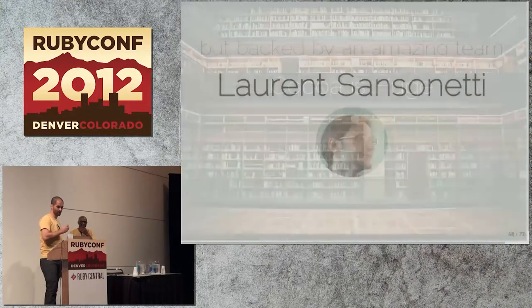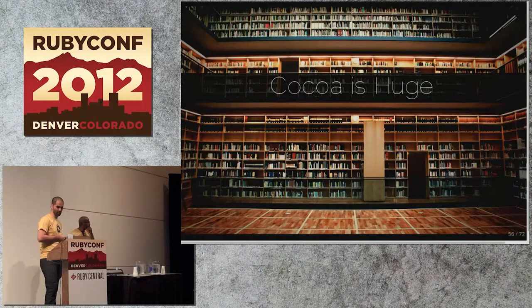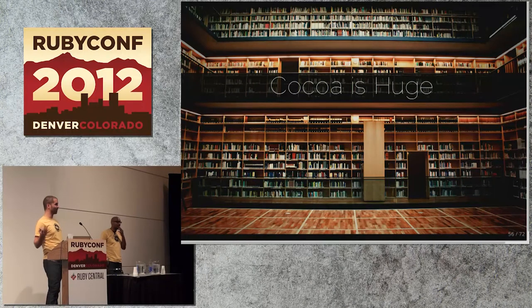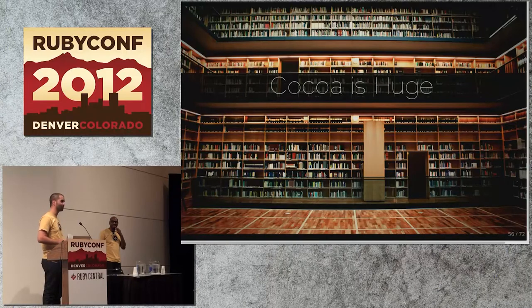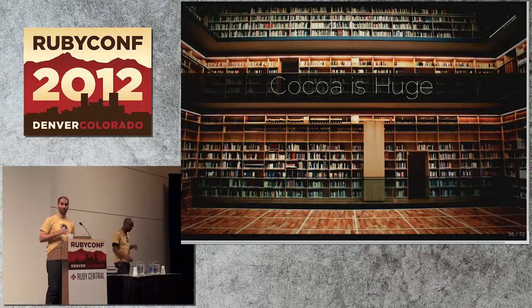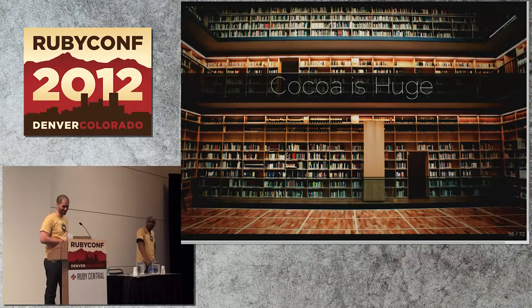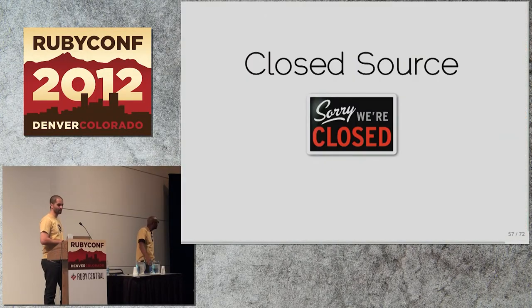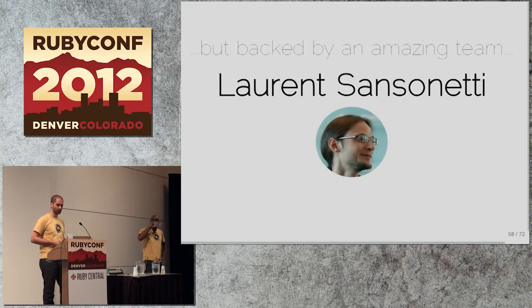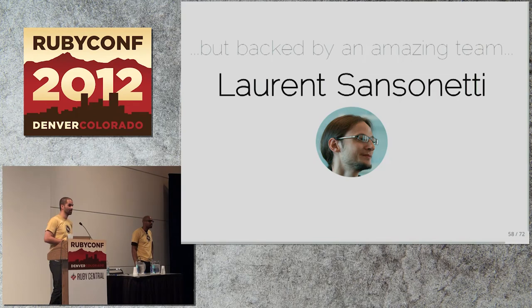Cocoa is huge — when I first heard about RubyMotion I thought I could just call whatever I want and use Nokogiri and so on. No — you're still writing a Cocoa app, and that's the bulk of the pain. RubyMotion is also closed source, which is a liability. If HipByte went under your commercial app could be stranded — though it'd be really interesting to see if they could do escrow or open-source the code under those circumstances.